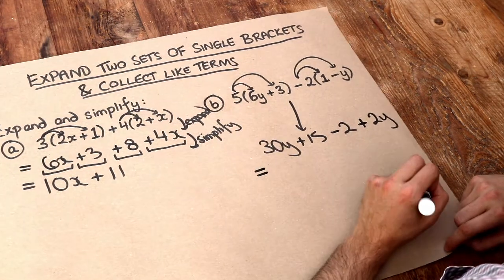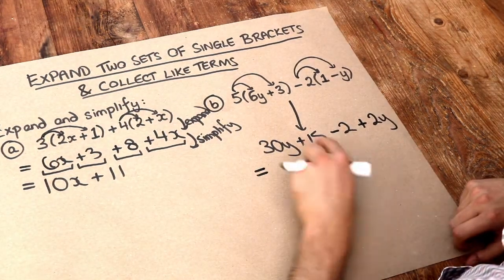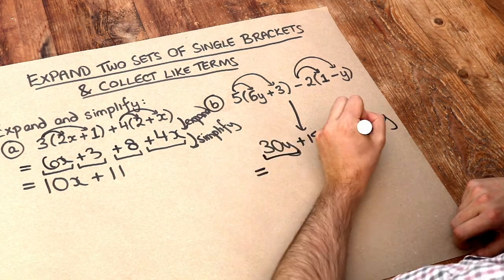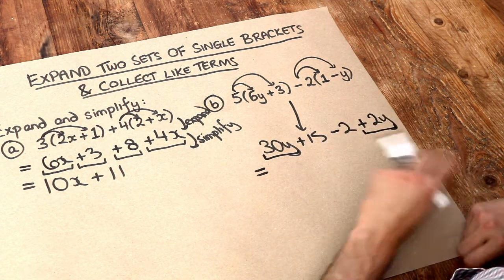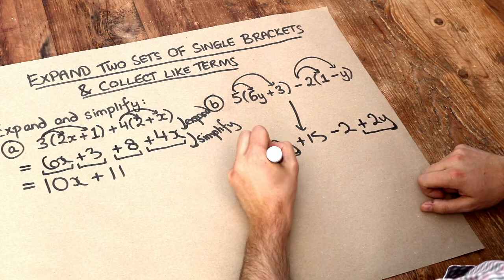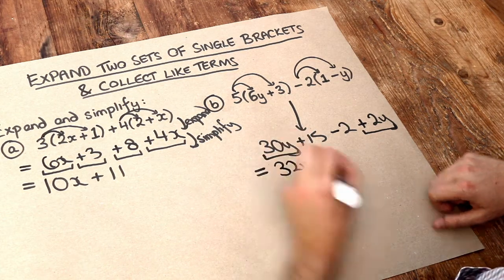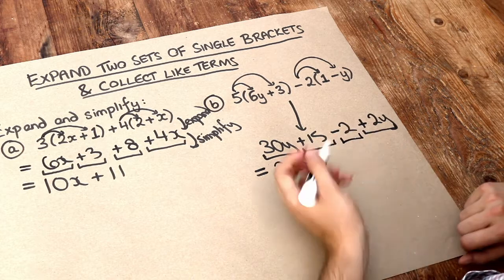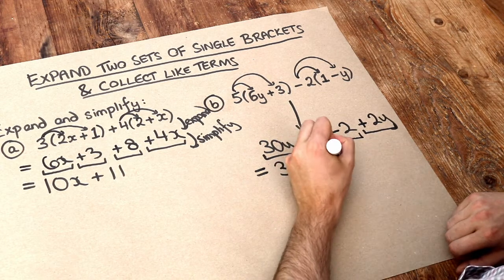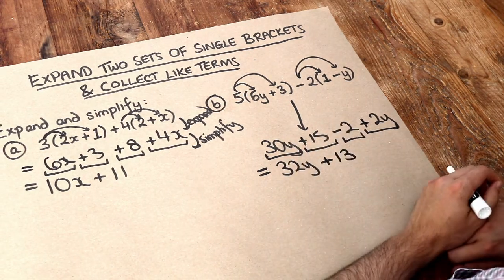So we've done the expanding bit. Let's do the simplifying bit where we've got 30y and we've got a plus 2y here. 30y plus 2y is 32 lots of y. And then we've got 15 and we've got minus 2. 15 minus 2 is plus 13. And there we go, we have simplified it.